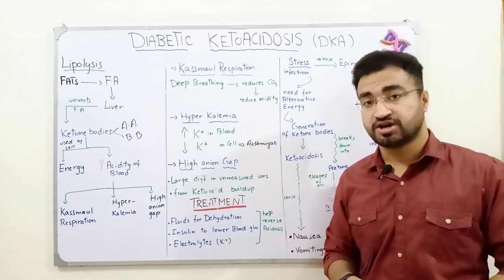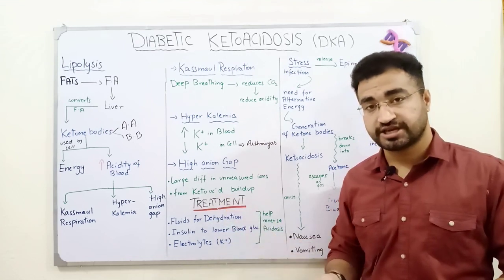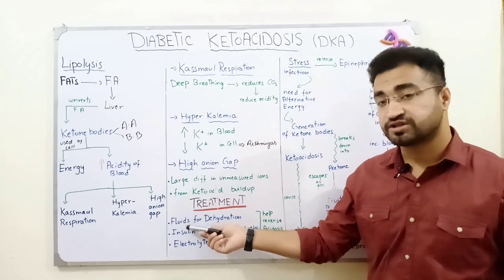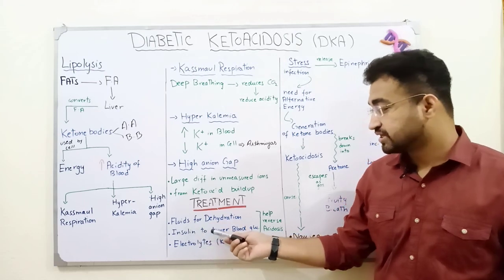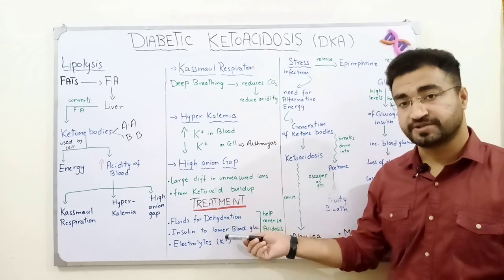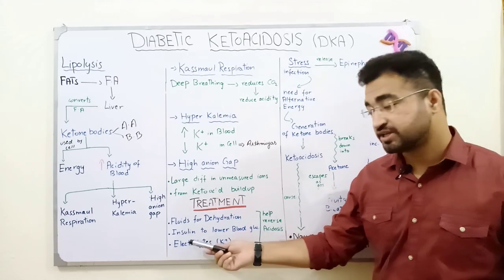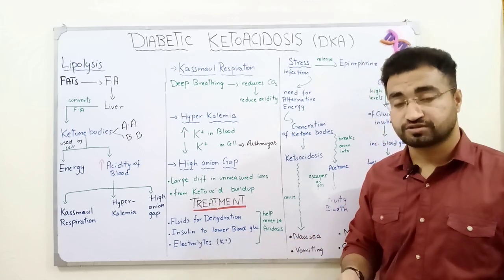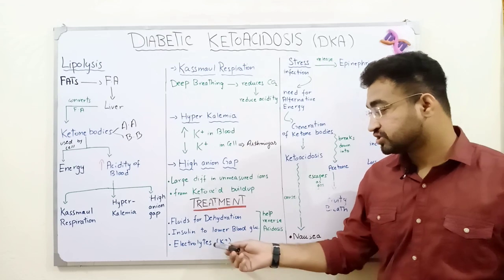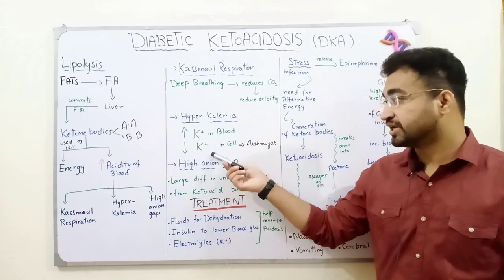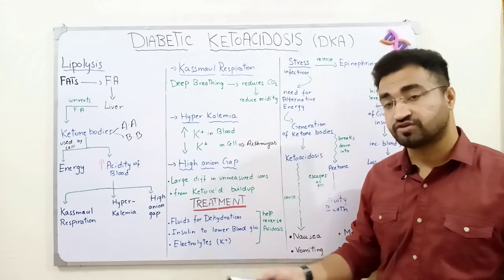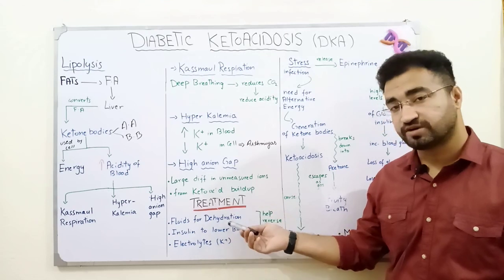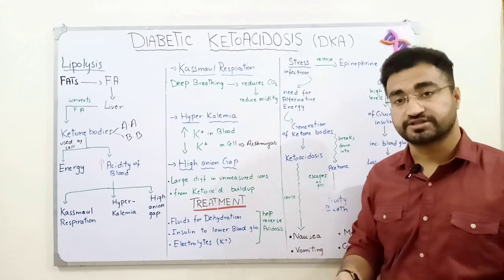For treatment and management of DKA, the patient is given lots of fluids to compensate for the dehydration. Since insulin is absent in the body, insulin is administered externally to reduce blood glucose levels. Electrolytes such as potassium, which are deficient inside the cells, are also administered. It is hoped that with these three treatment methods, DKA can be reversed.